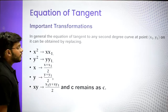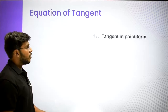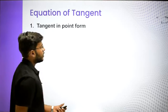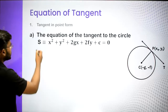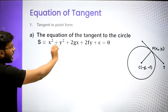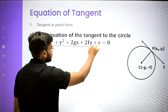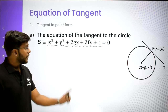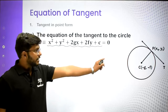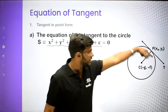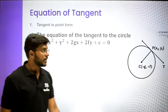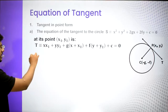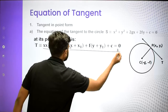This is your first form of equation of a tangent - tangent in point form. Now let us see what the equation will be. If you have this equation of the circle given to you and you want to write down the equation of tangent at a point x1, y1, we have already seen the formula.